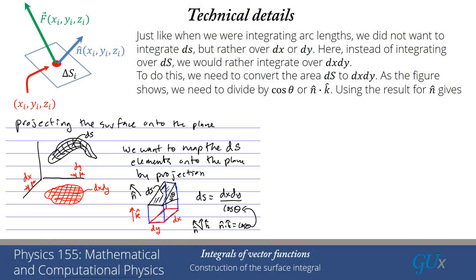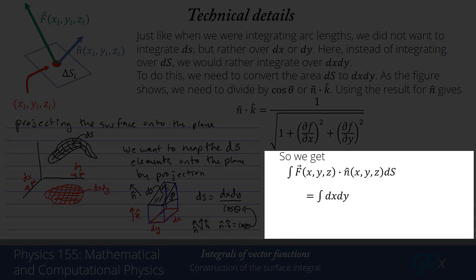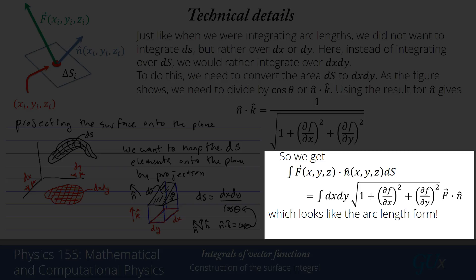To actually calculate this, recalling that the k-th component of n was 1, we get 1 times 1 equals 1, divided by the normalization factor √(1 + (df/dx)² + (df/dy)²). Since we divide by n·k, that denominator goes into the numerator. So the integral still has the integrand f·n, but ds is changed to dx dy times √(1 + (df/dx)² + (df/dy)²). This looks just like the arc length formula, except now we do it in two separate directions, giving a more complicated square root.